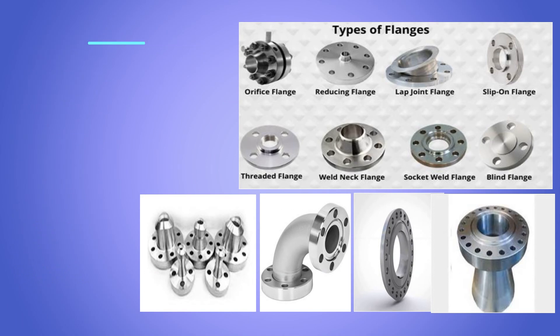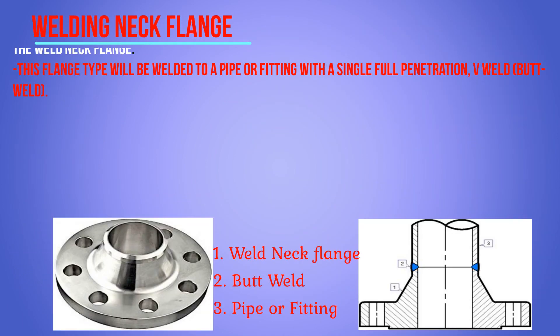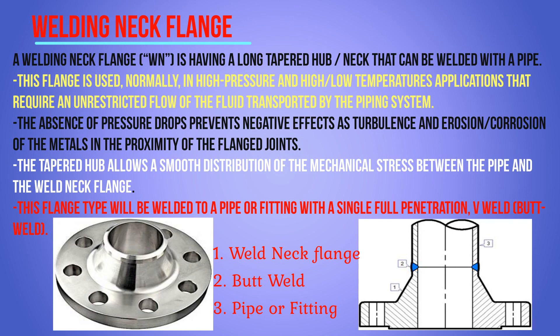The weld neck flange, normally represented as WN, has a long tapered hub neck that can be welded with pipe. This flange is used normally in higher pressure and high or low temperature applications that require an unrestricted flow of fluid transported by the piping system. The absence of pressure drops prevents negative effects such as turbulence and erosion or corrosion of the metal in the proximity of the flange joints.